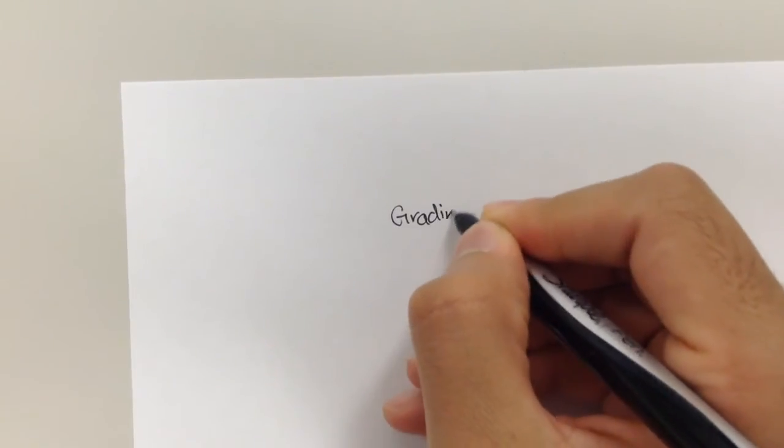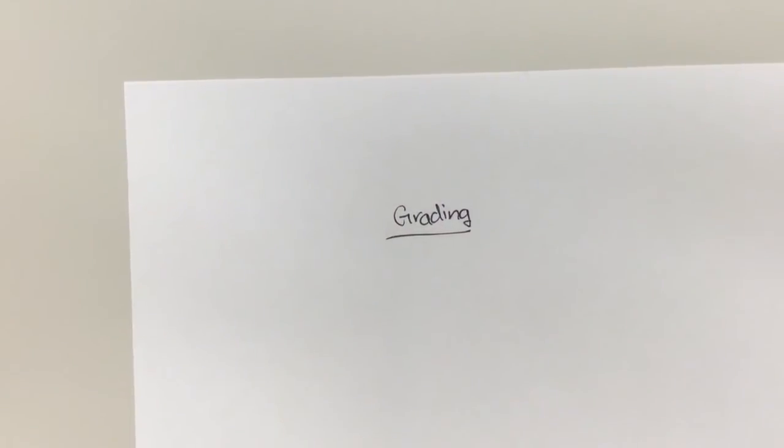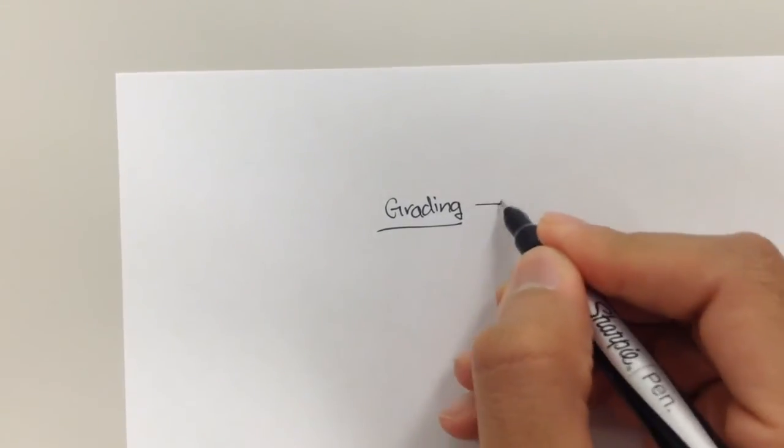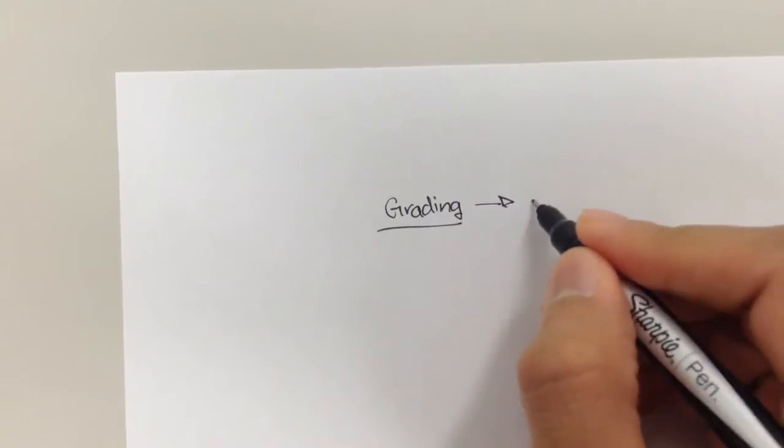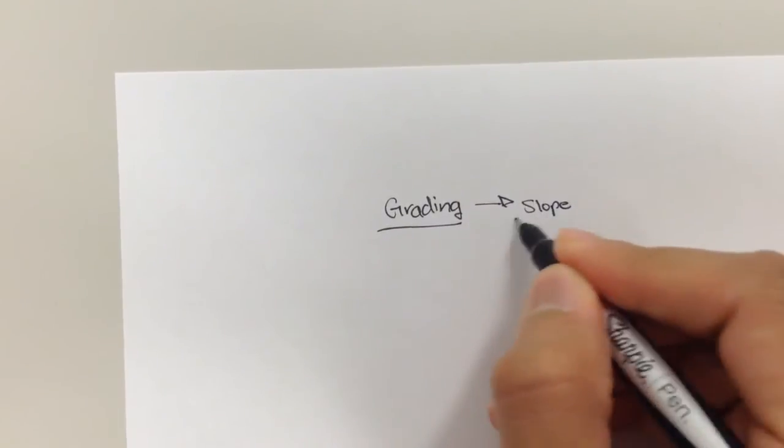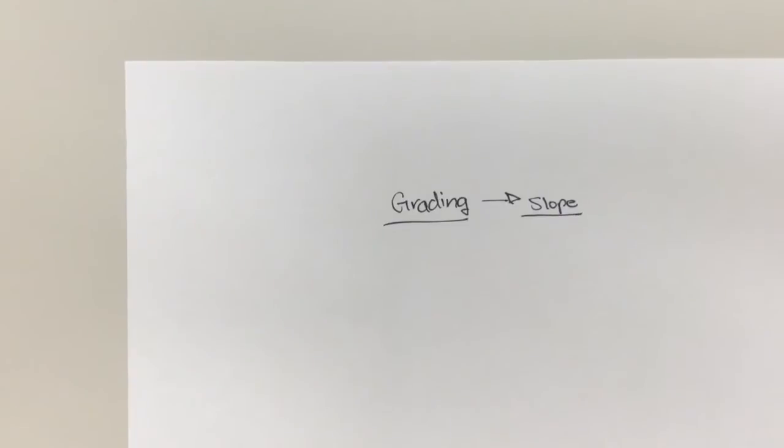Grading. And grading has many names you may recognize. The first one is grading. The second one is slope. It's also been called pitch or incline. And grading, essentially, I'm just going to say it's slope for the purpose of this video